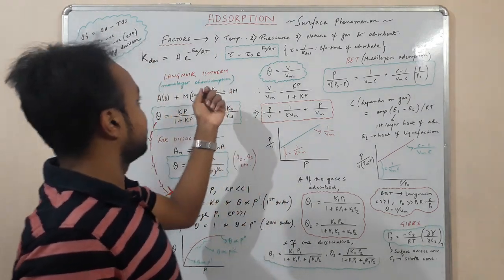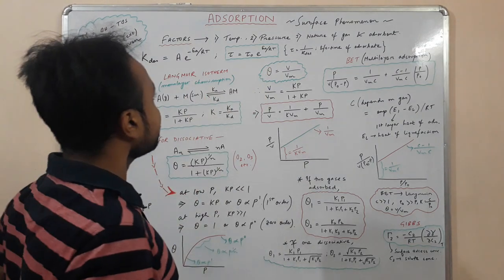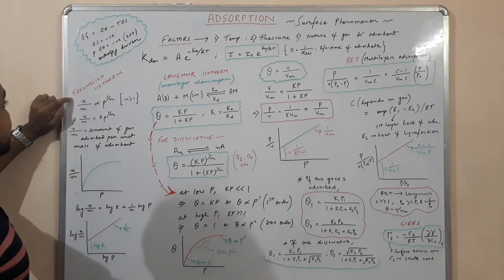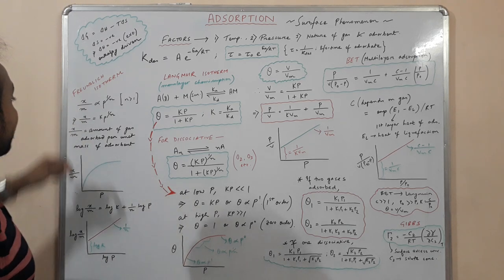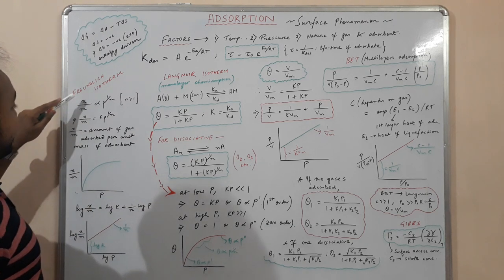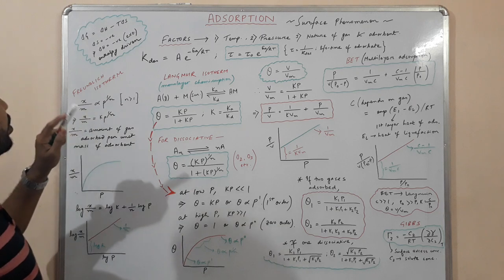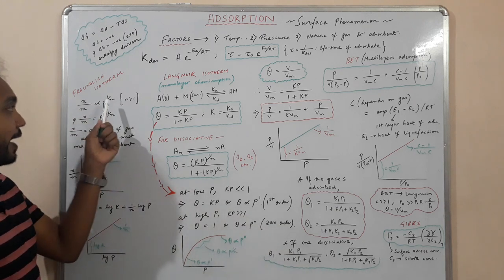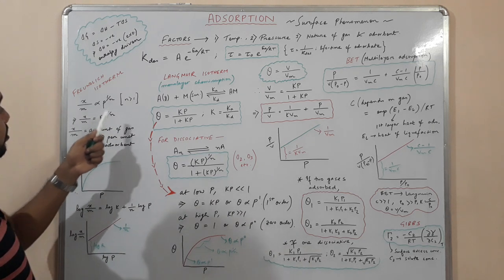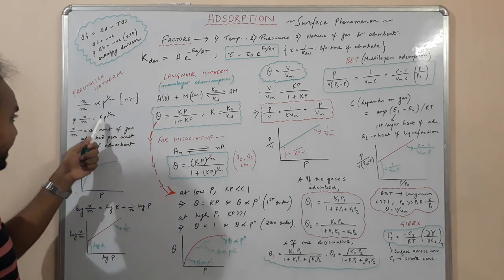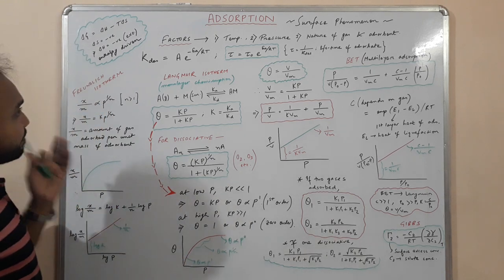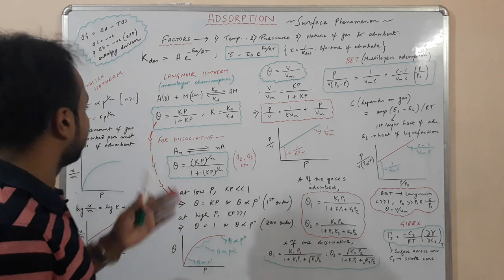The first isotherm is the Freundlich isotherm, which states that the amount of gas adsorbed per unit mass of adsorbent is directly proportional to p^(1/n), where n is greater than 1. So x/m = k · p^(1/n), where k and n are constants whose values depend on the nature of the gas and the nature of the adsorbent.